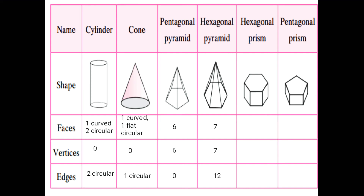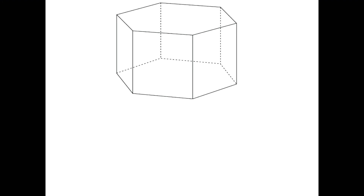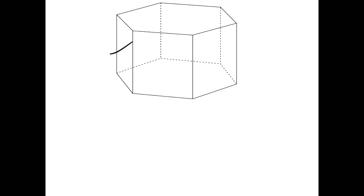Next is hexagonal prism. Number of faces is 8. Front side square, back side square: 2 faces. Then top side and bottom side — same hexagonal faces: 4 faces. Left side and right side — again 2 square faces in opposite: then 7, 8. Faces is 8.